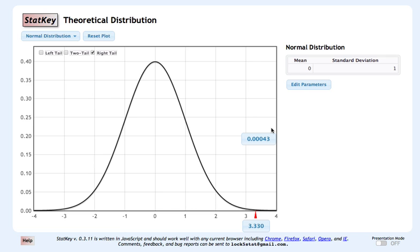So we would have very strong evidence that the proportion of women that view divorce as morally acceptable is not 60%, and in fact is greater than 60%, or 0.6. So now let's go to our second example.